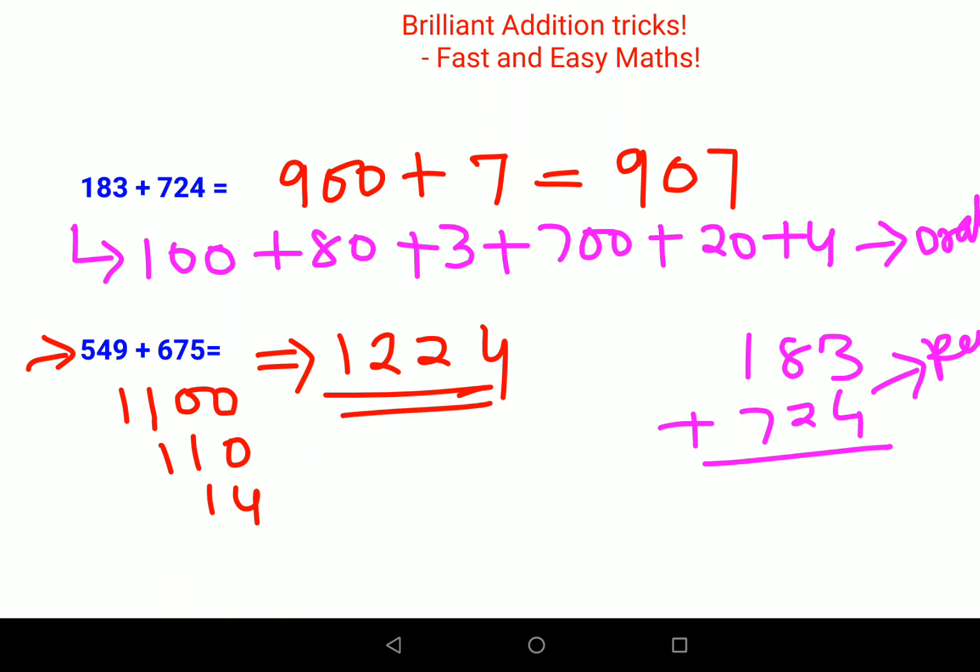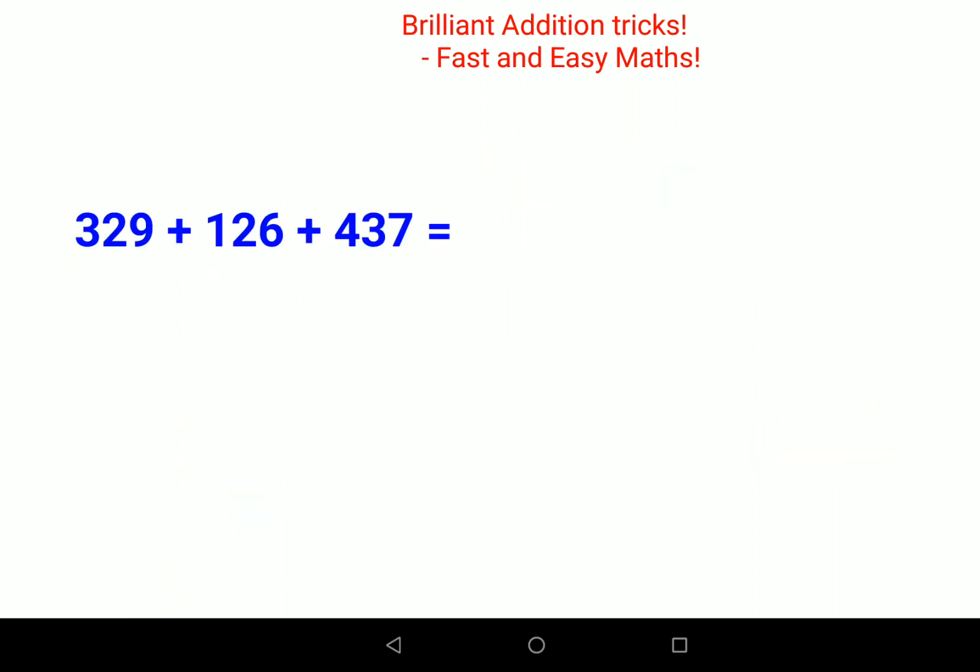Let's do one more. Now we were doing two numbers, now I'm taking three numbers. Let's do this: 300 plus 100 plus 400 gets you 800. 20 plus 20 plus 30 gets you 70. 6 plus 9 plus 6 gets you 15, 15 plus 7 gets you 22. So your answer is 892.